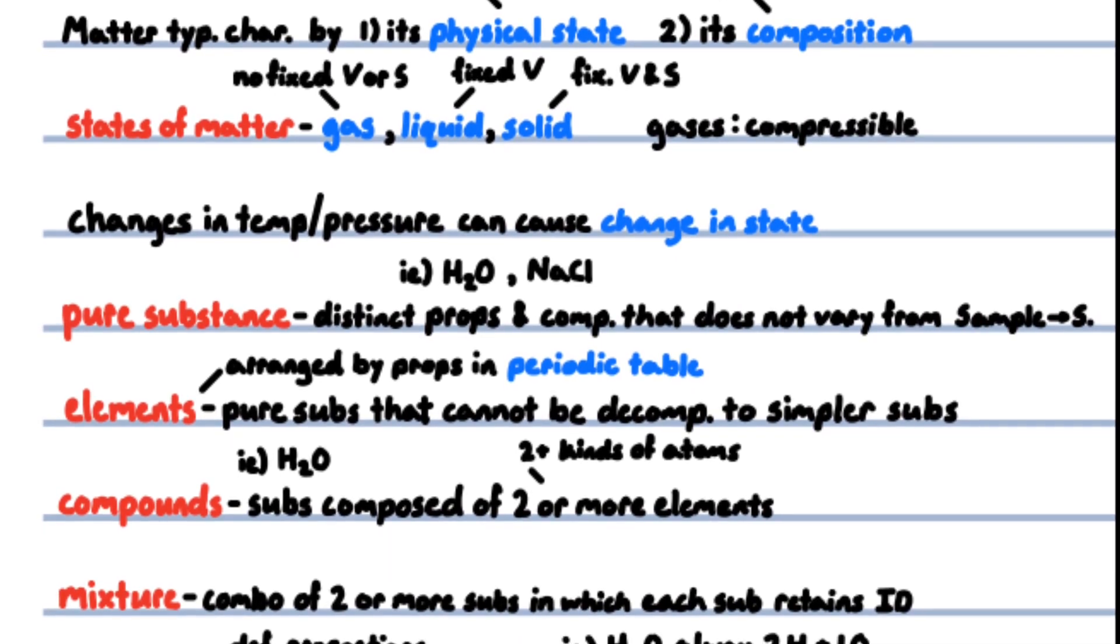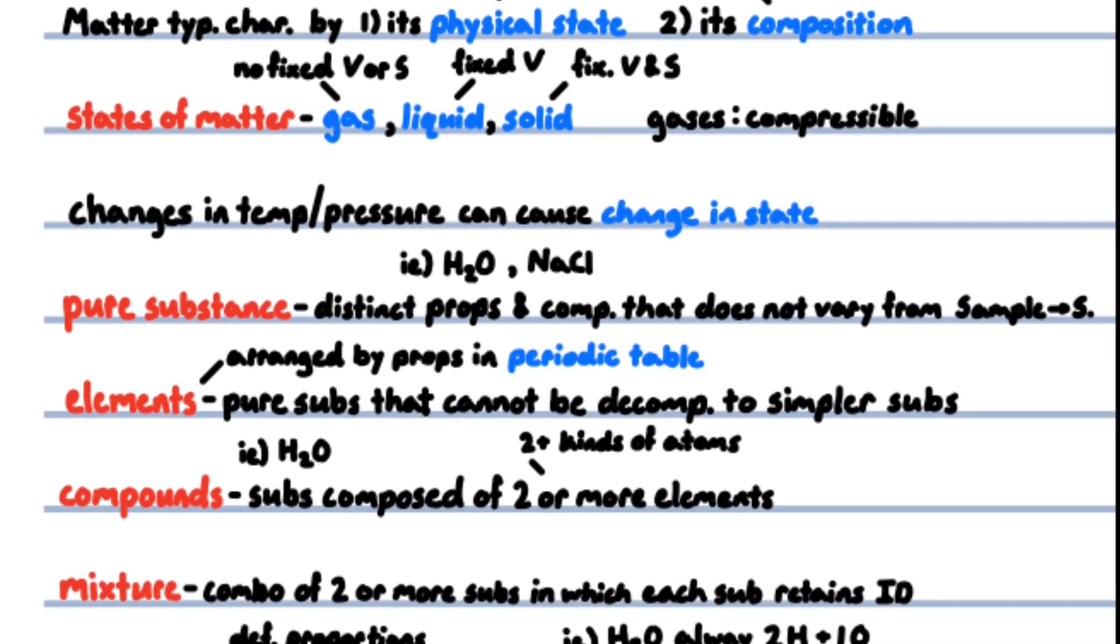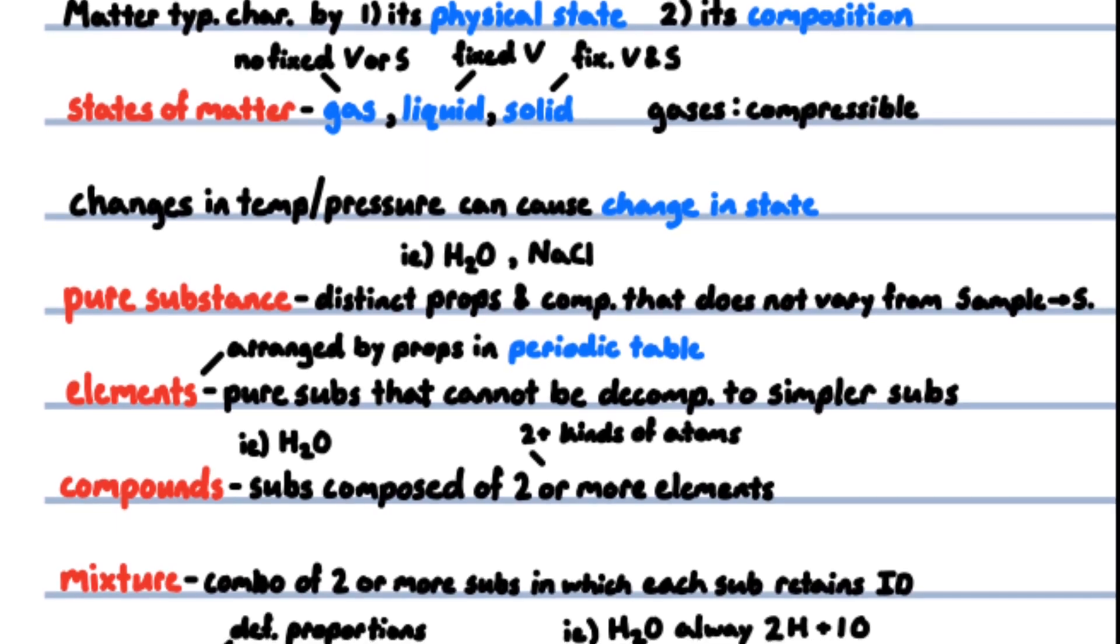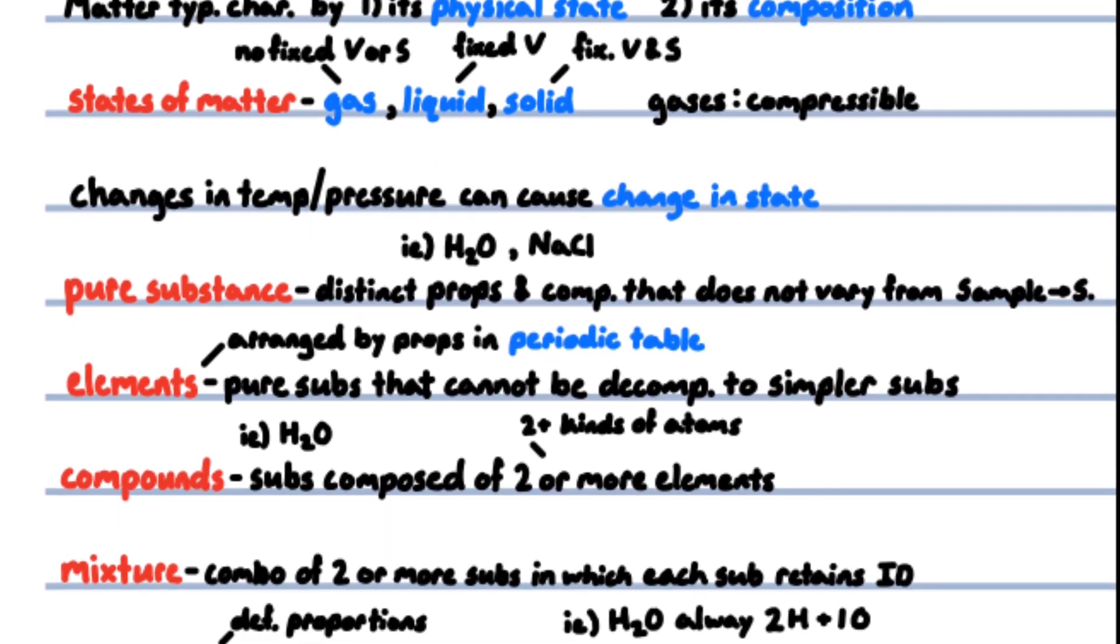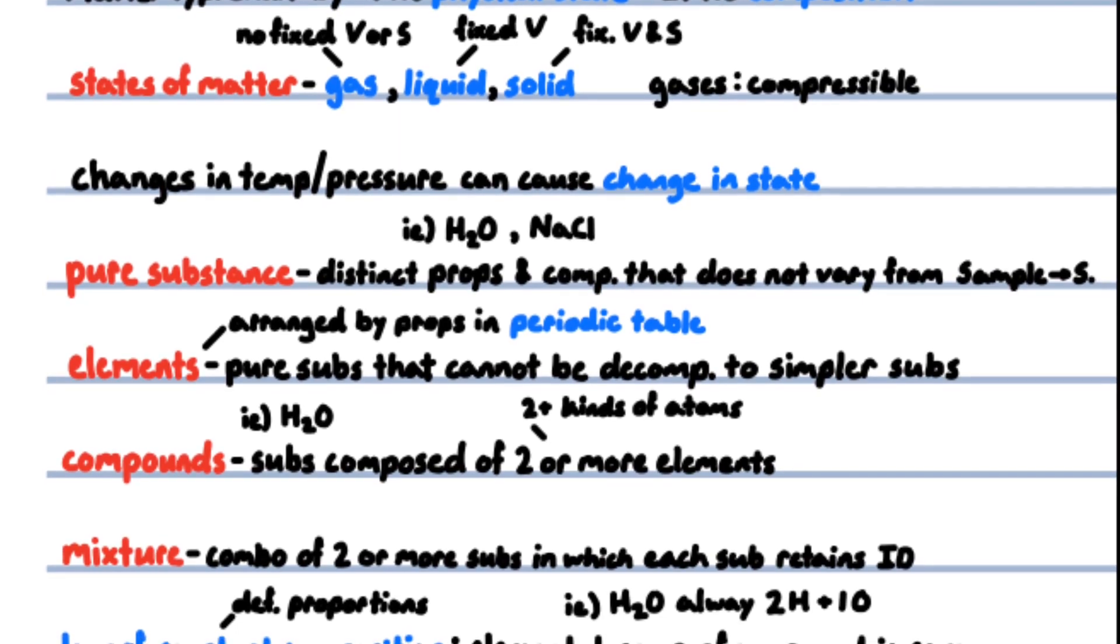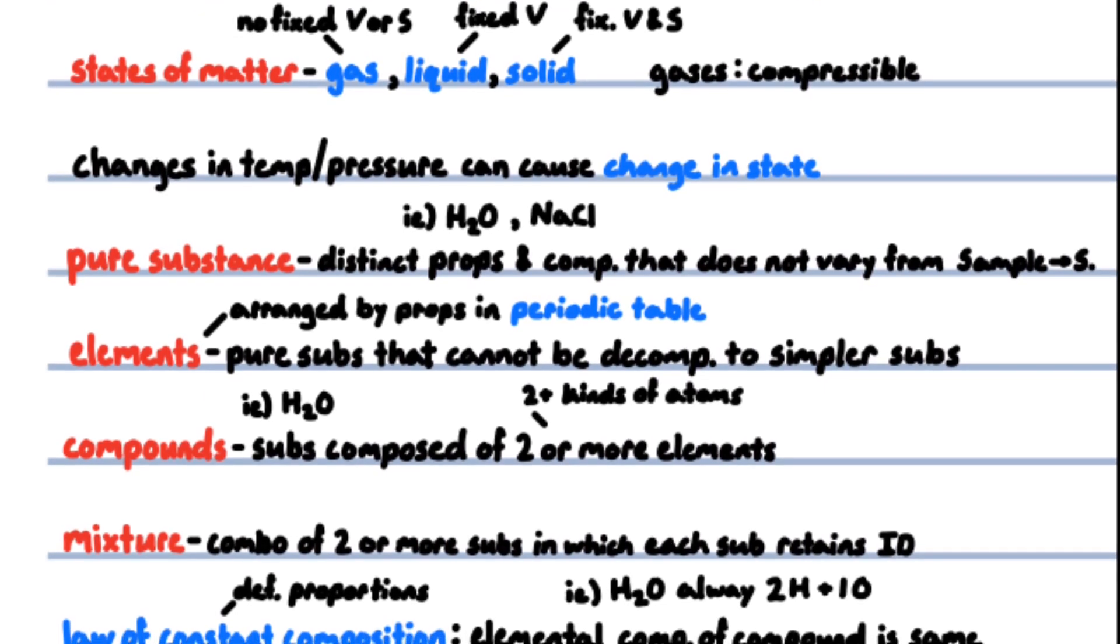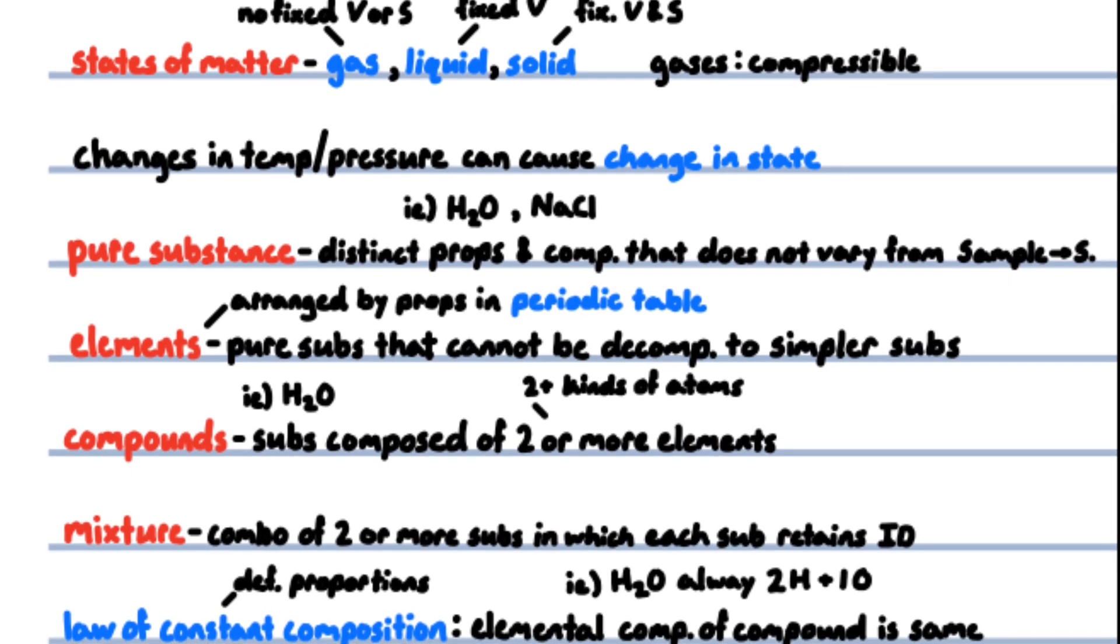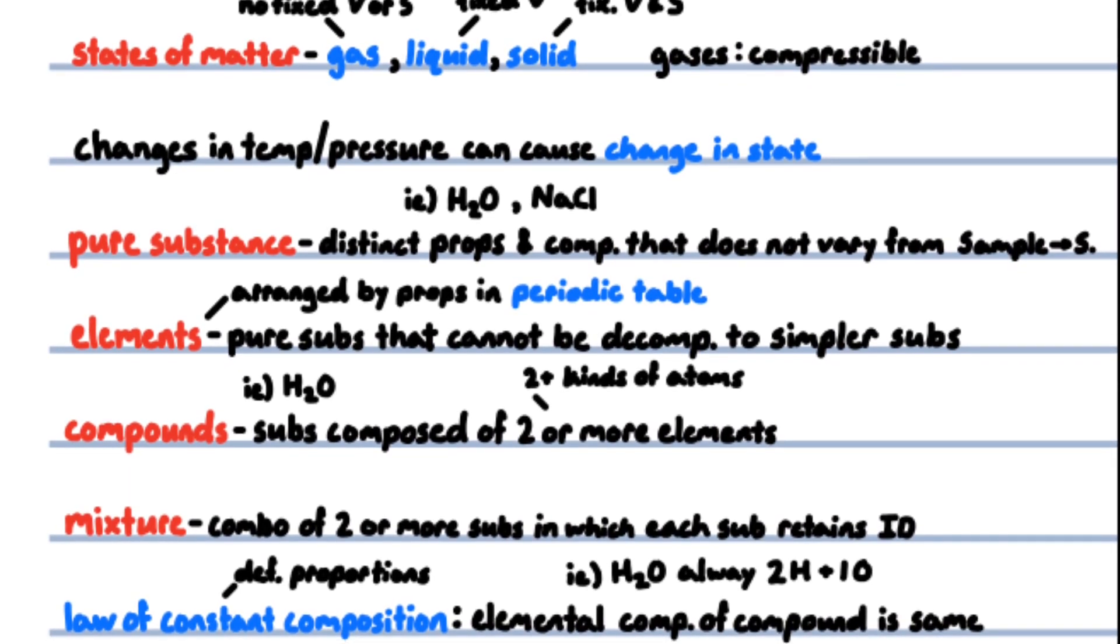In a gas, molecules are far apart and moving at high speeds. Compressing a gas causes the space between the molecules to decrease. In a liquid, the molecules are closer but still moving rapidly, which allows for molecules to slide past each other to pour the liquid. In a solid, the molecules are held tightly together, unable to slip past one another, leading to definite shape.